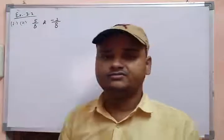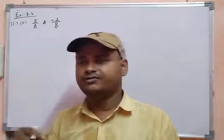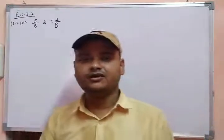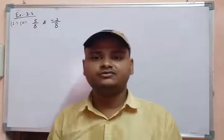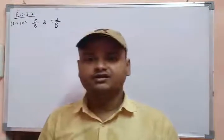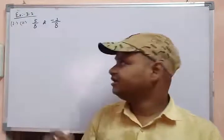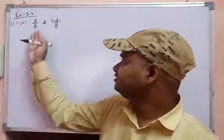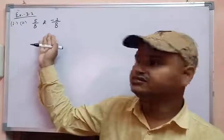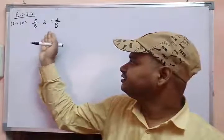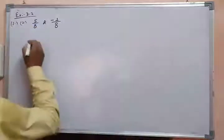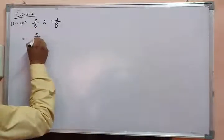If you have been given like rational numbers, it is very easy to add them directly. If you have unlike rational numbers, you first have to convert both into like rational numbers, and after that you add or subtract. Here, both the denominators are the same, so this is an example of like rational numbers, and it is very easy to add.